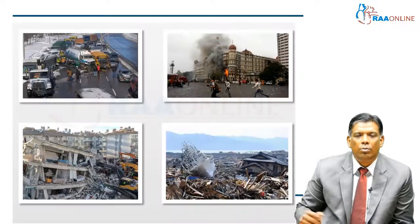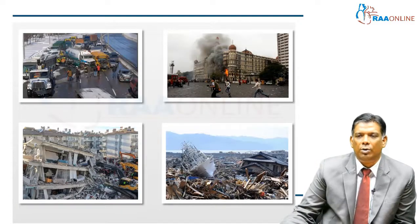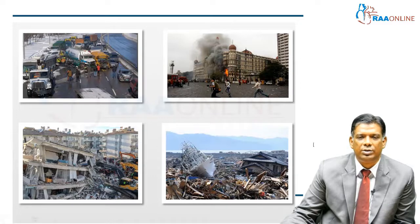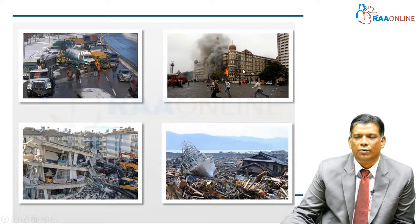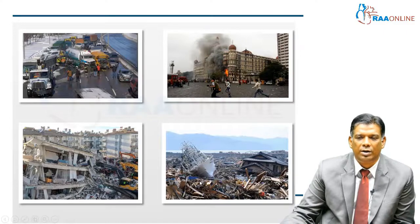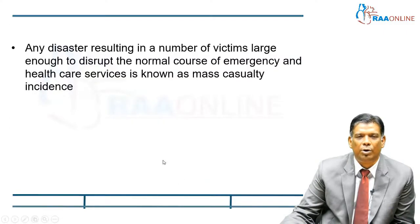We are discussing today about both man-made as well as natural disasters. You can have a major RTA, you can have a bomb blast — this is the famous attack on the Taj Mahal Hotel in Bombay — where you have a major building collapse, or you could have a tornado or flooding that can cause severe problems.